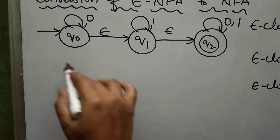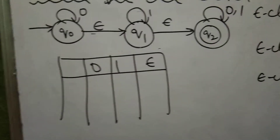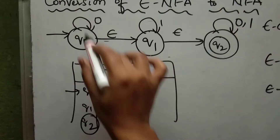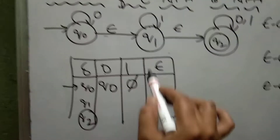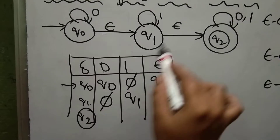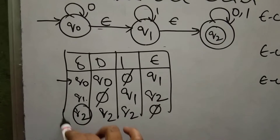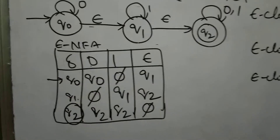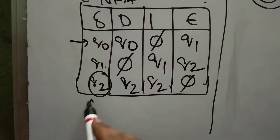Now draw the transition table with columns 0, 1, and epsilon, and rows Q0, Q1, Q2. Q0 upon 0 stays at Q0. Q0 upon 1 has no transition, so it is dead state. Q0 upon epsilon goes to Q1. Q1 upon 0 is dead state. Q1 upon 1 stays at Q1. Q1 upon epsilon goes to Q2. Q2 upon 0 and upon 1 both go to Q2. Q2 upon epsilon is dead state. This is the transition table for NFA with epsilon.